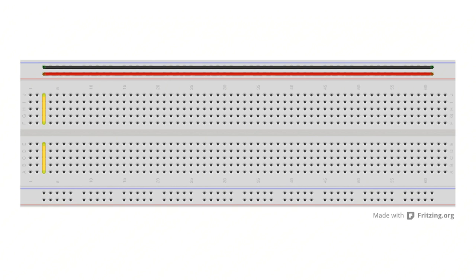In the short rows in the center of the board you can connect a wire to one hole for example and one leg of a resistor to another, and they are now connected together as part of a circuit.